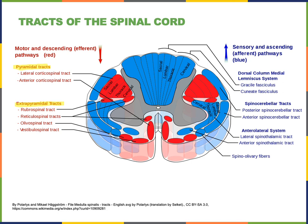There are also extrapyramidal tracts. These extrapyramidal tracts carry information from nuclei in the brainstem that are involved in unconscious coordination of motor commands. Sensory feedback such as proprioception can be used to help fine-tune motor commands and maintain posture. This unconscious coordination and fine-tuning of motor commands involves signals traveling down through the extrapyramidal descending tracts in the spinal cord.